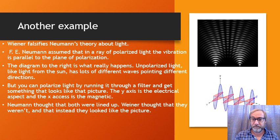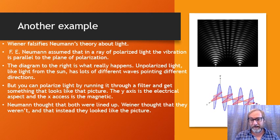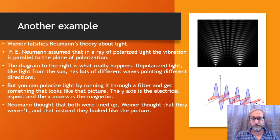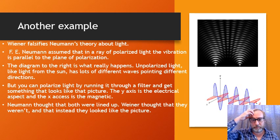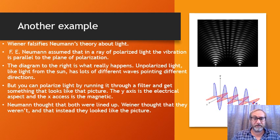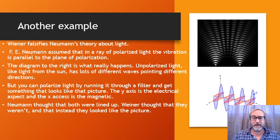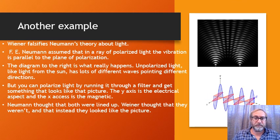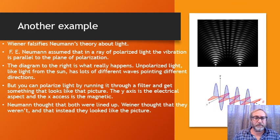That wasn't known at the time of Neumann. Neumann thought both the electrical and magnetic components oscillated in the same direction. The way this was phrased was that in a ray of polarized light, the vibration is parallel to the plane of polarization. The diagram shows what really happens — they are perpendicular, not parallel.